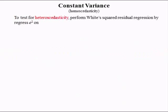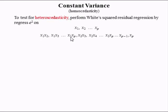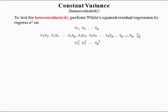So let's see if we might have one problem variable. To test for heteroscedasticity, we can perform White's squared residual regression by regressing E squared on the independent variables, interactions of these independent variables — x1 times x2, x1 times x3, out to x1 times xp, x2 times x3, out to xp minus 1 times xp — and the quadratic transformations of the independent variables. This is a regression involving a lot of independent variables, so if we have six independent variables, you're going to have a lot of additional variables included in the subsequent regression.